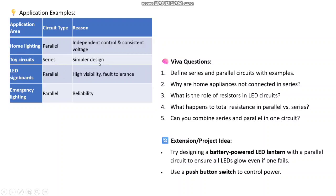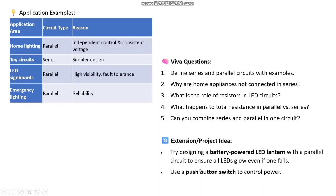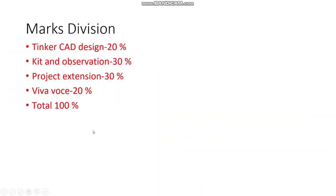The 5 operations are listed. The extension or project idea is a new component that distinguishes Thinker Lab from conventional lab. The mark division is: Thinker cap 20%, kit observation 30%, project and extension 30%, and viva 20% — totally 100% marks distributed.